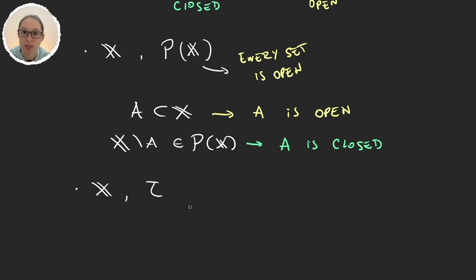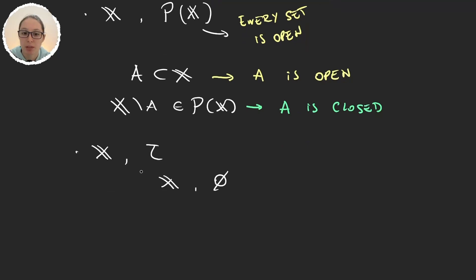What happens with the set itself and the empty set? Well if I want to see for example that X is closed, I would have to do X minus X. This is the empty set and the empty set is obviously in my topology because topologies have to satisfy this and so X is closed. But also X is in the topology and so X is open.